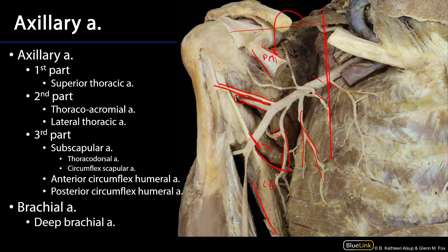Once we get beyond teres major, we're no longer in the axillary artery but in the brachial artery. The first branch of the brachial artery is the deep brachial artery, which is the dominant blood supply to the posterior compartment of the arm — think triceps brachii. The brachial artery itself is the dominant blood supply to the anterior compartment of the arm — biceps brachii, coracobrachialis, etc.